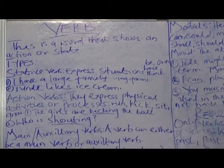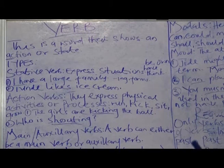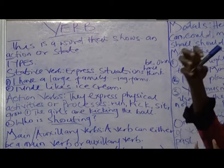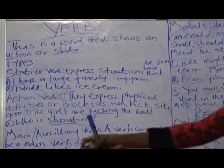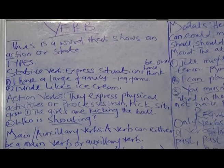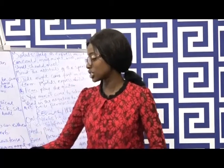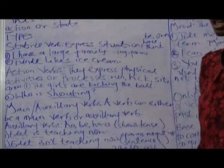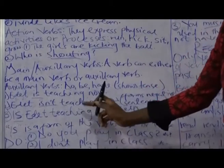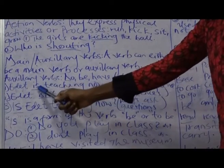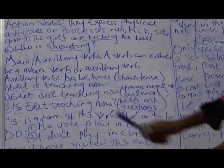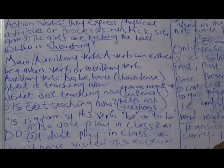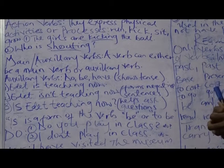Now, the main and auxiliary verbs. The main verb is the verb telling us what action is happening in the sentence. The auxiliary or helping verb is the verb that is helping the main verb. For example, 'Edit is teaching now.' 'Is' is the auxiliary verb and 'teaching' is the main verb. The auxiliary verbs we have are do, be, and have. One of the main functions of an auxiliary verb is that it shows tense.